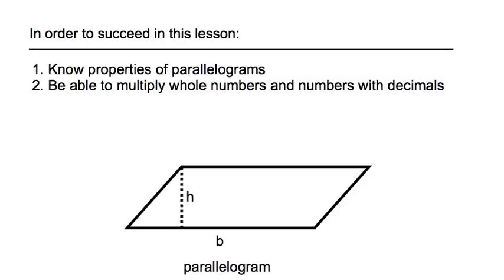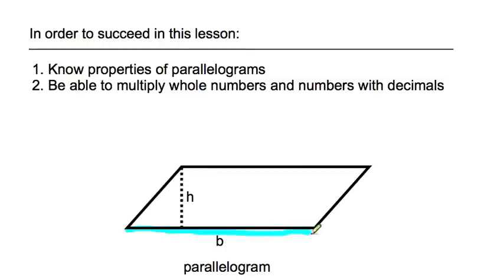In order to succeed in this lesson, we're going to have to know the following things. You have to know some properties of parallelograms. For perimeter, you have to know that the opposite sides are equal on the sides and the top and the bottom. For a parallelogram, you have to understand that a parallelogram forms a rectangle if you just reconfigure it. We're going to do the base, which is the bottom side, times the height.